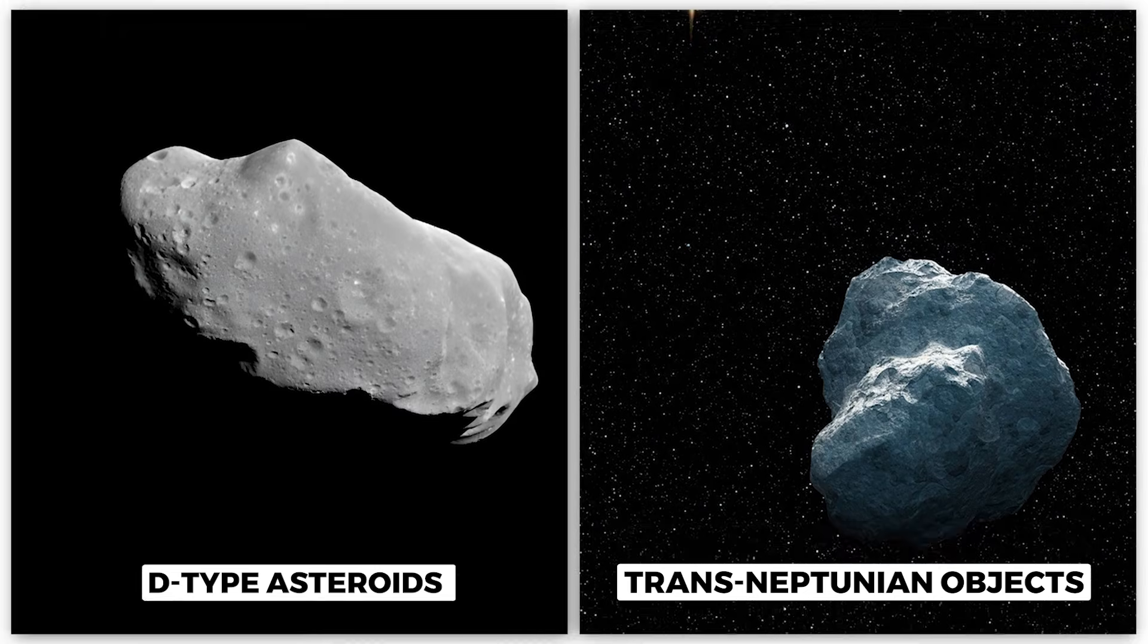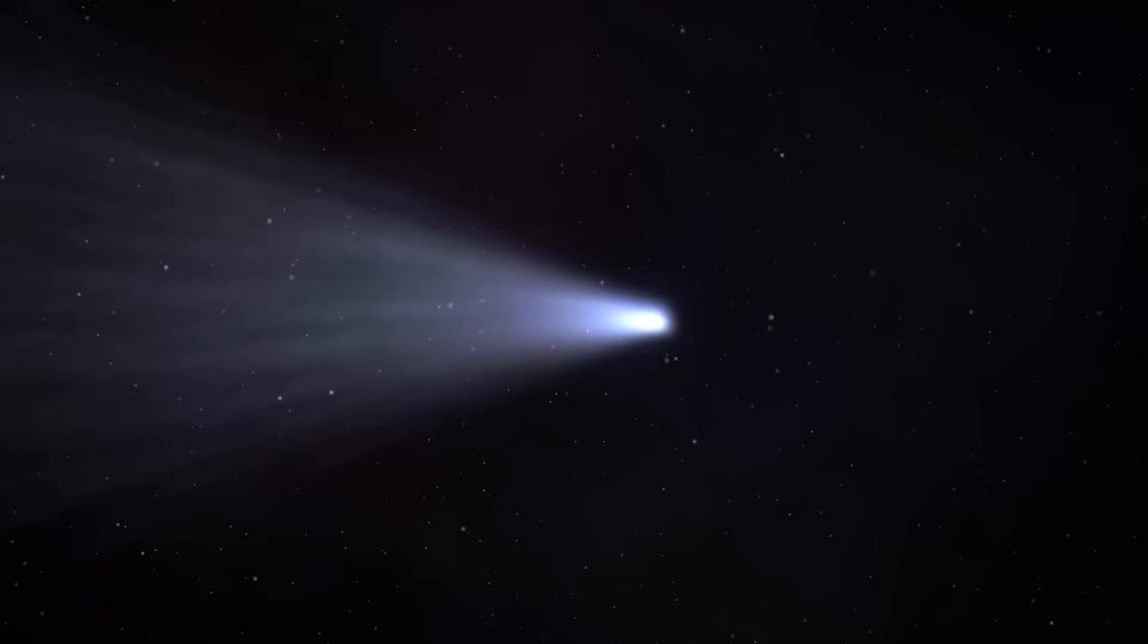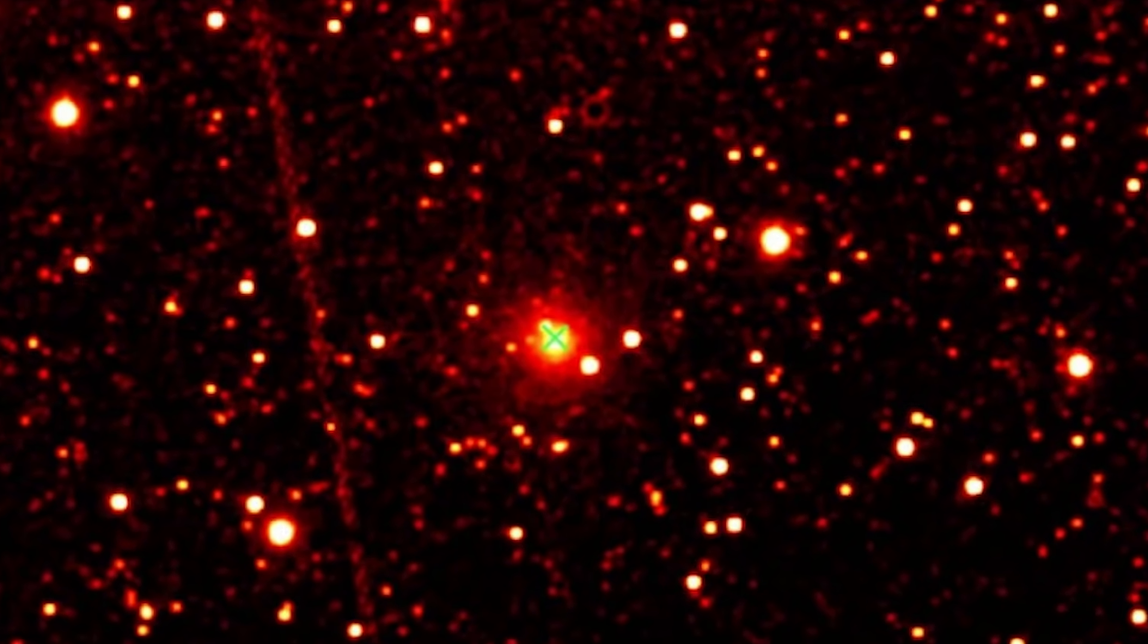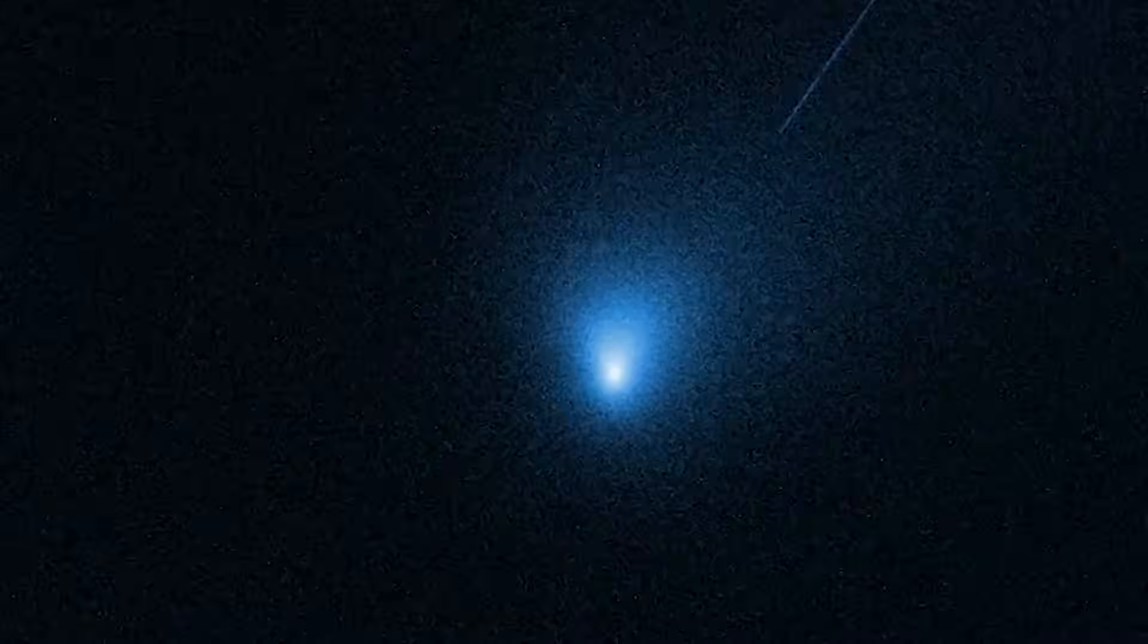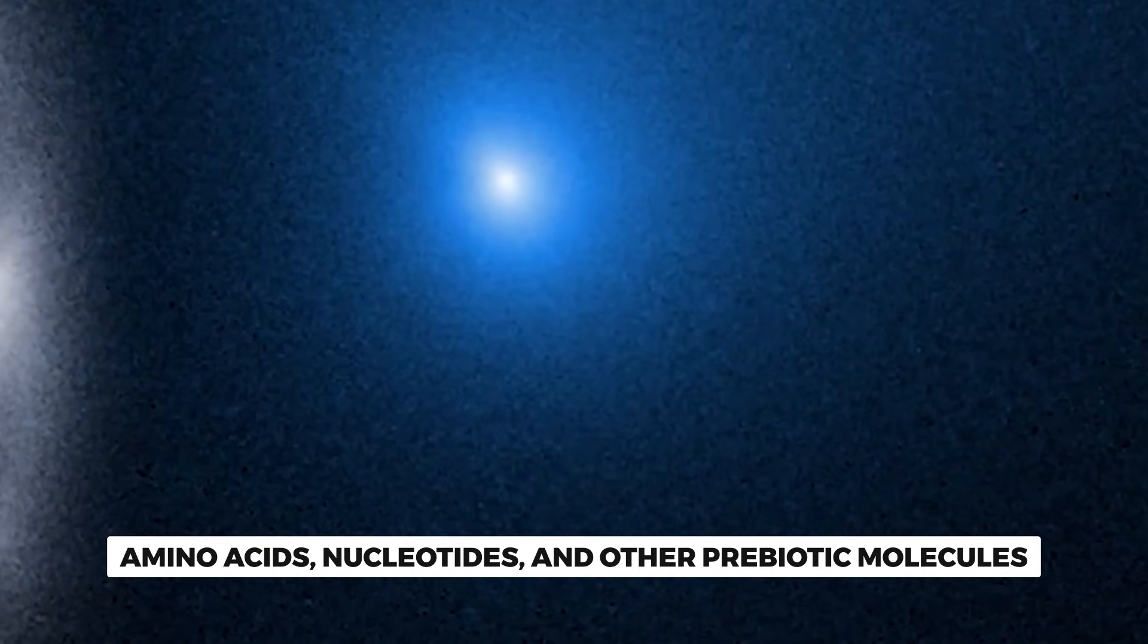D-type asteroids and trans-Neptunian objects, which are more similar to 3I Atlas in composition, are expected to be even more enriched in these organic compounds. What this means is that 3I Atlas is almost certainly carrying amino acids, nucleotides, and other prebiotic molecules.